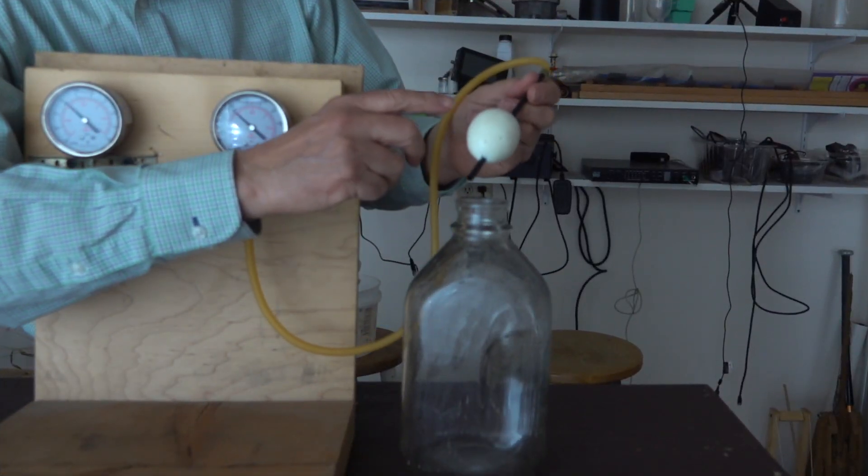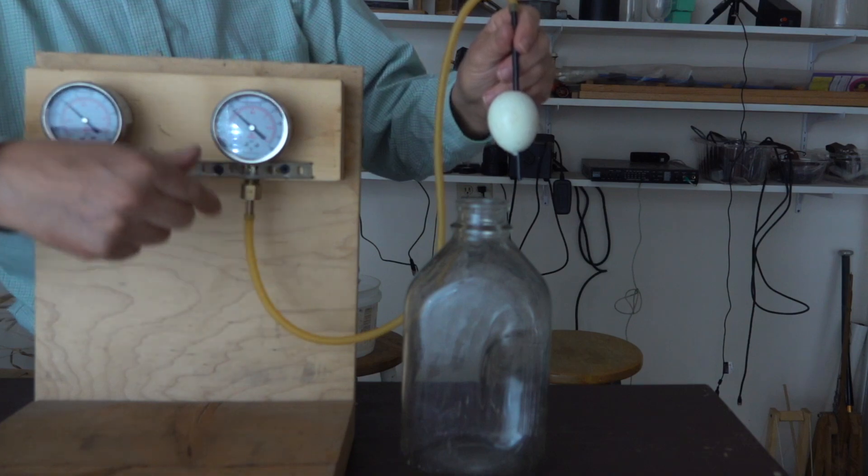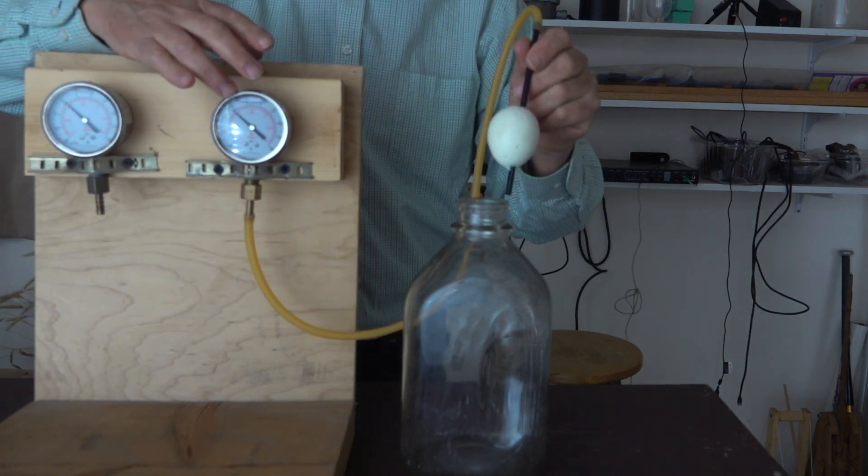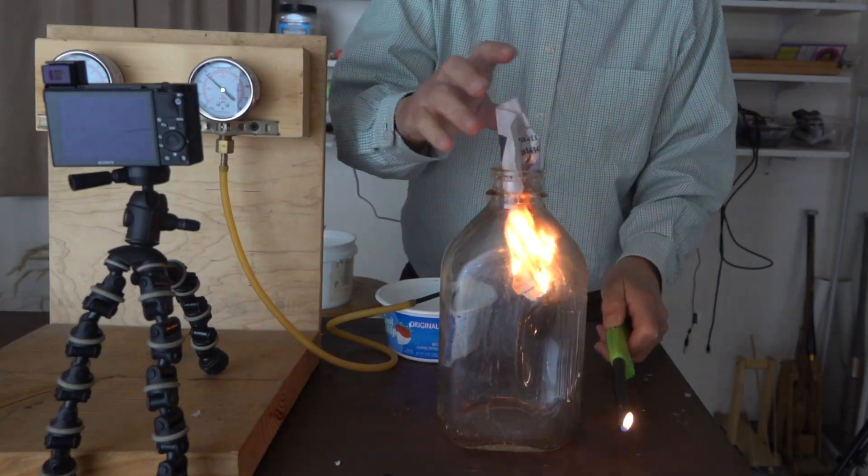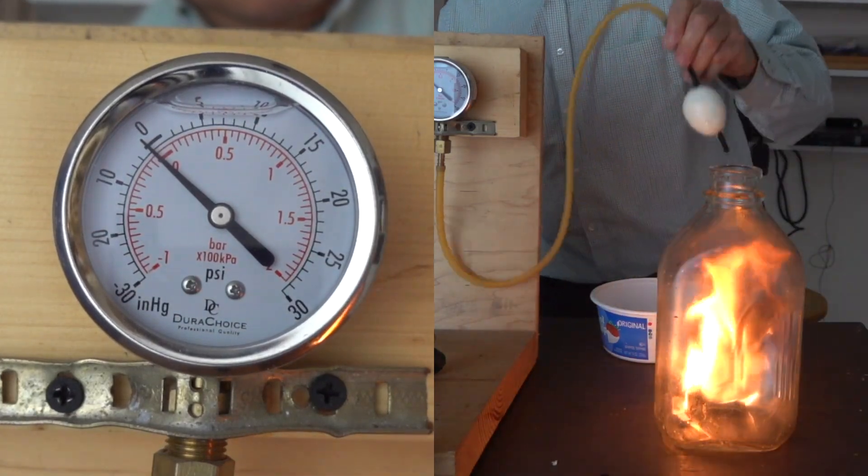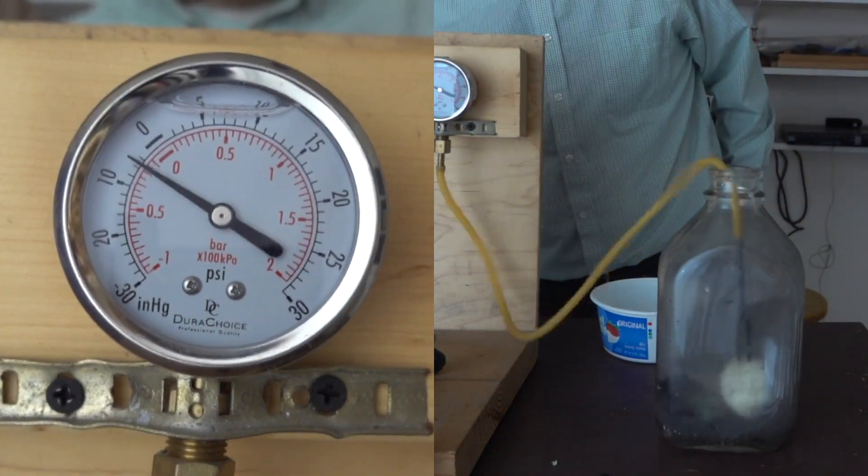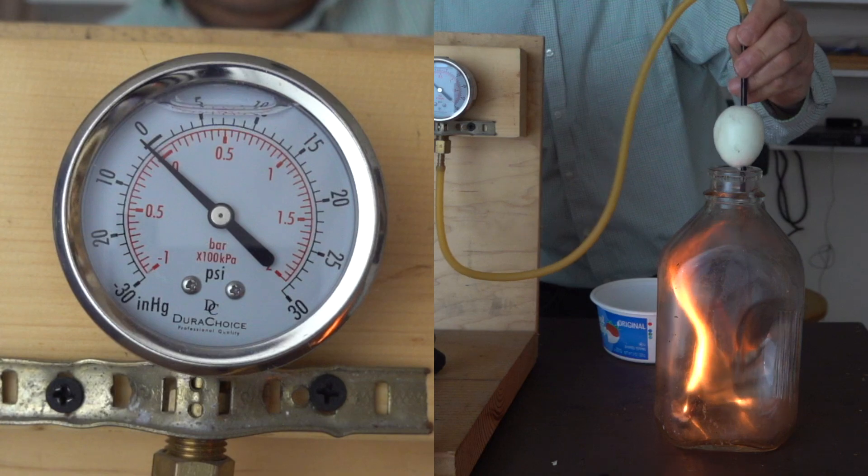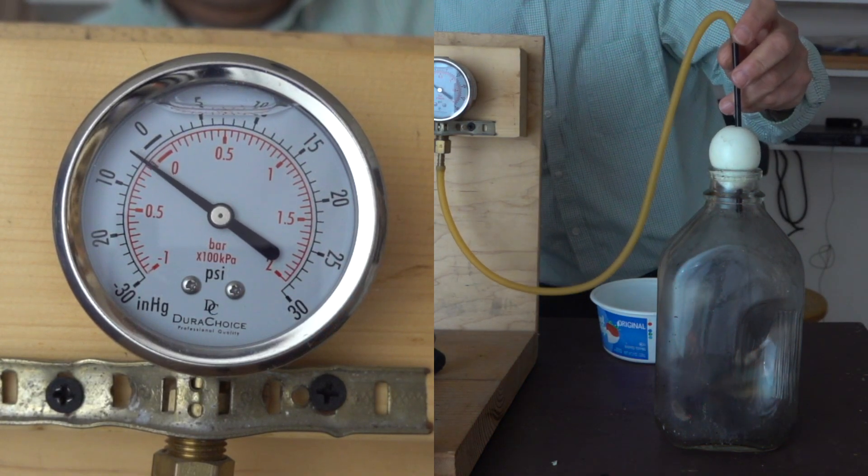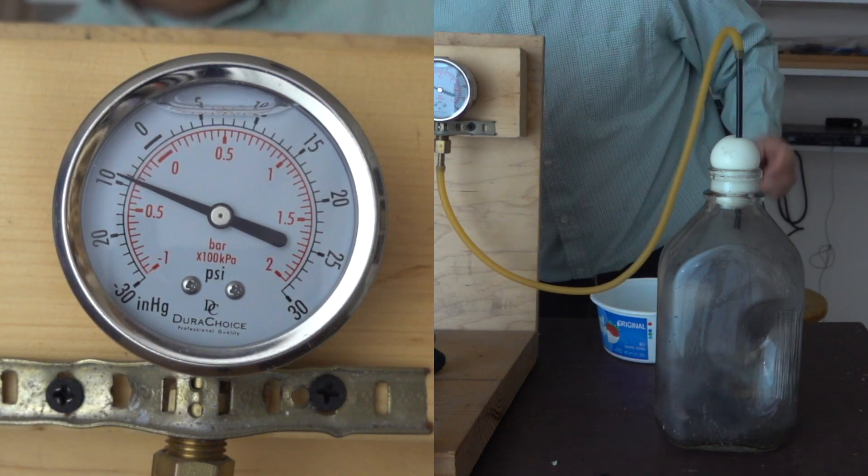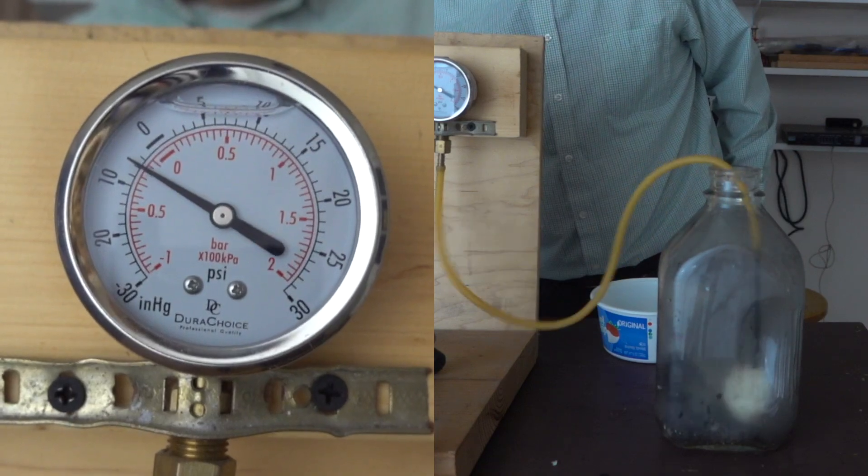Here I have a straw going through the egg, the straw is connected to a hose, and the hose is connected to a vacuum gauge. On the vacuum gauge we get a reading of about 10 inches of mercury.